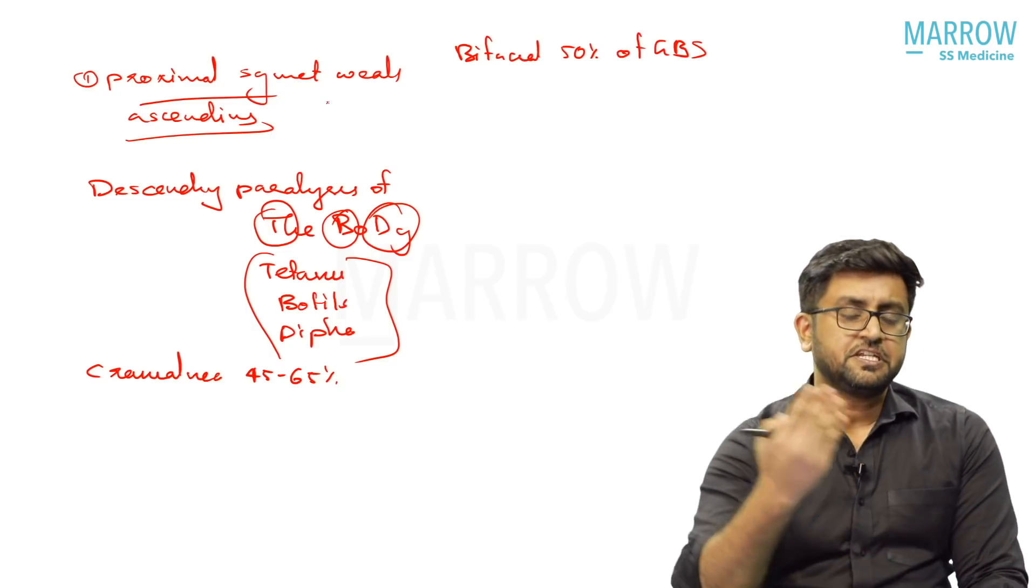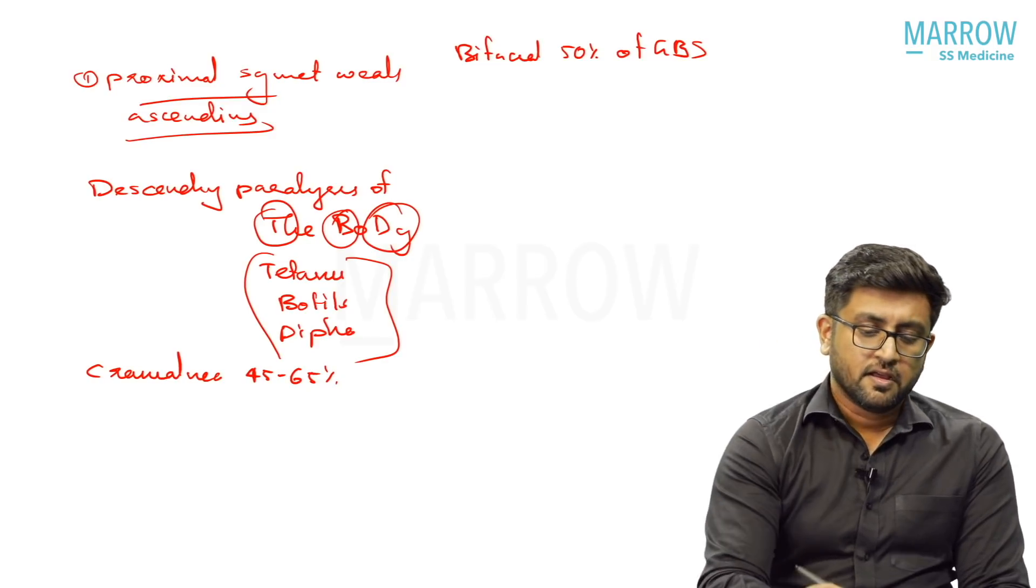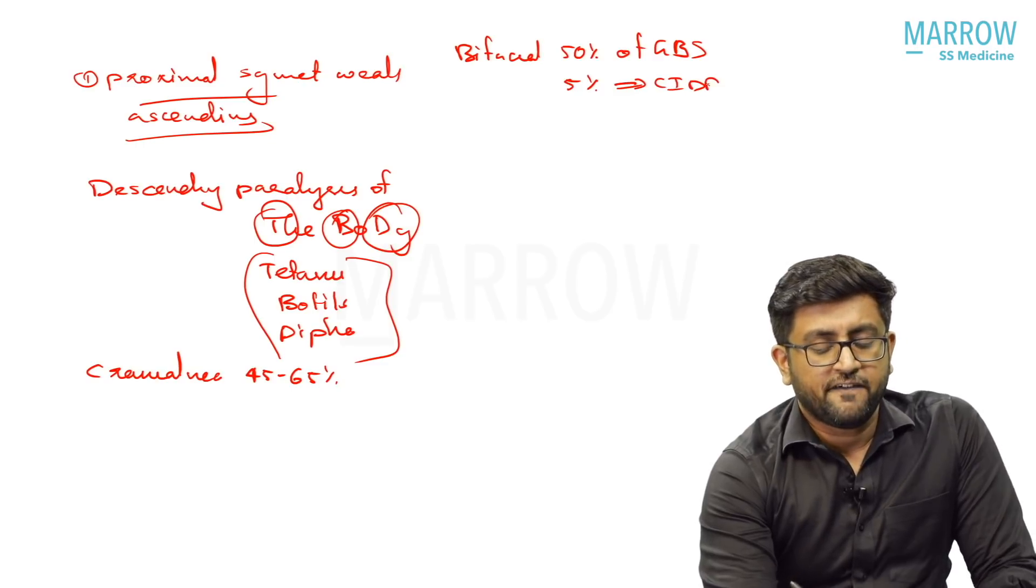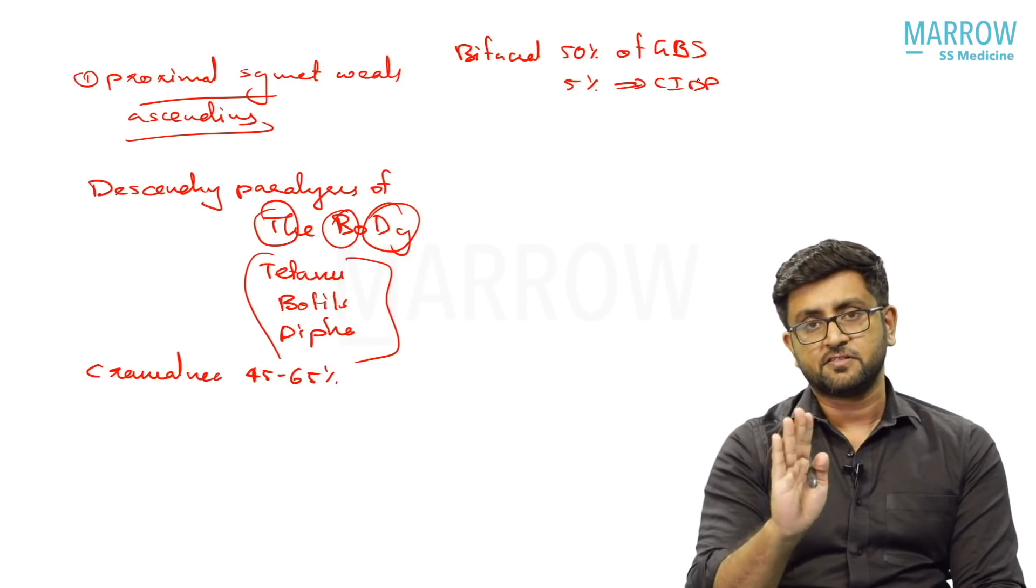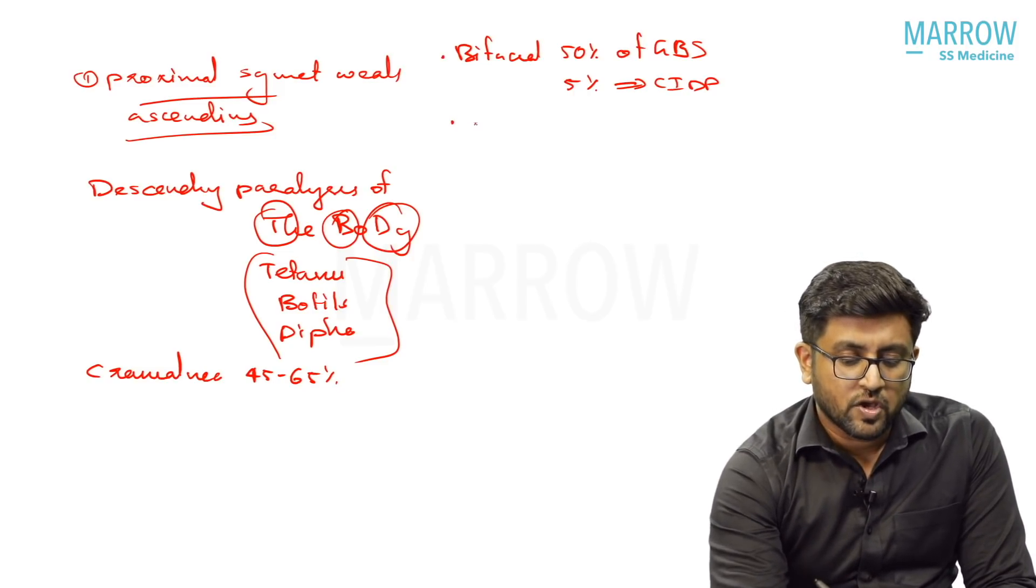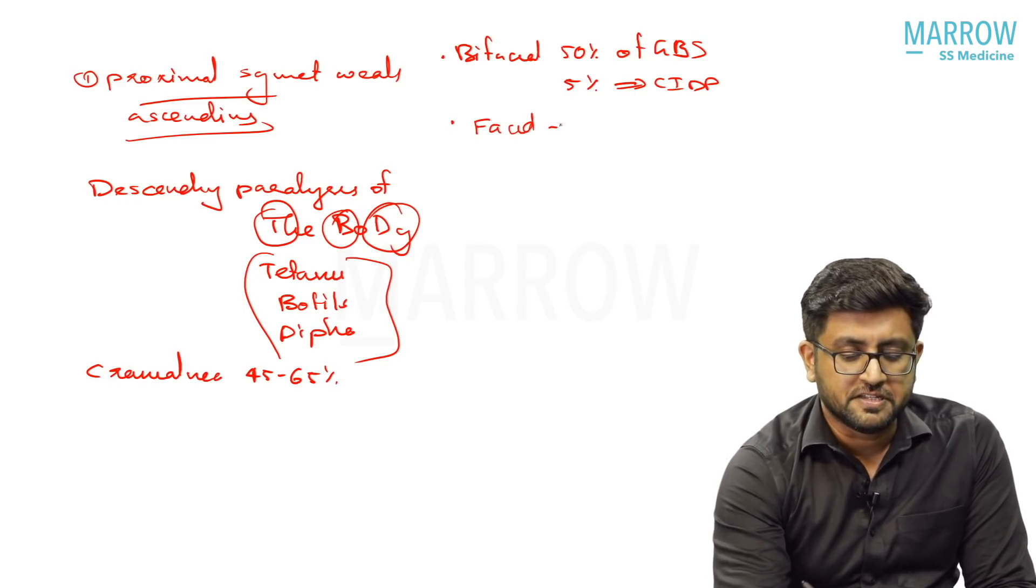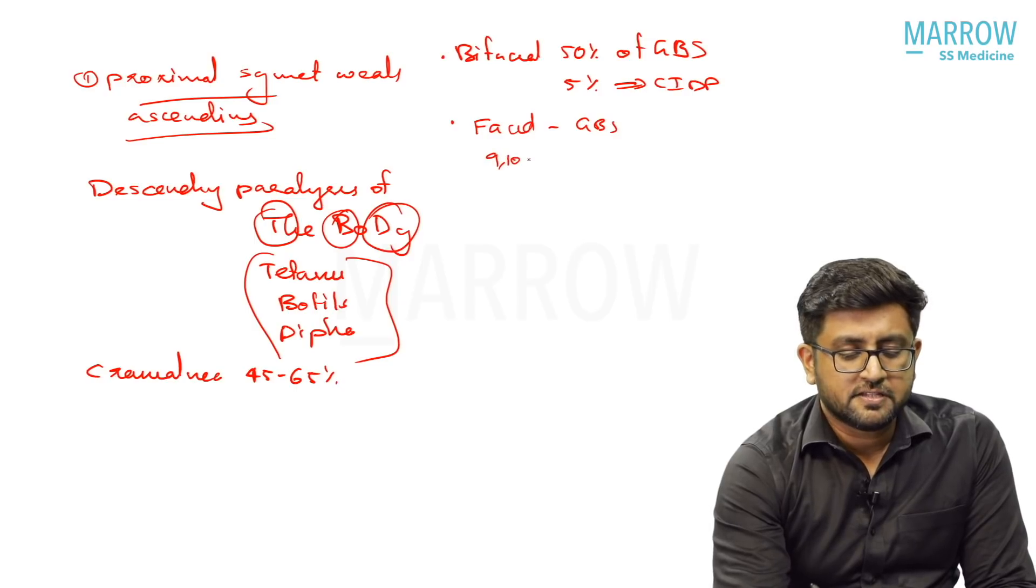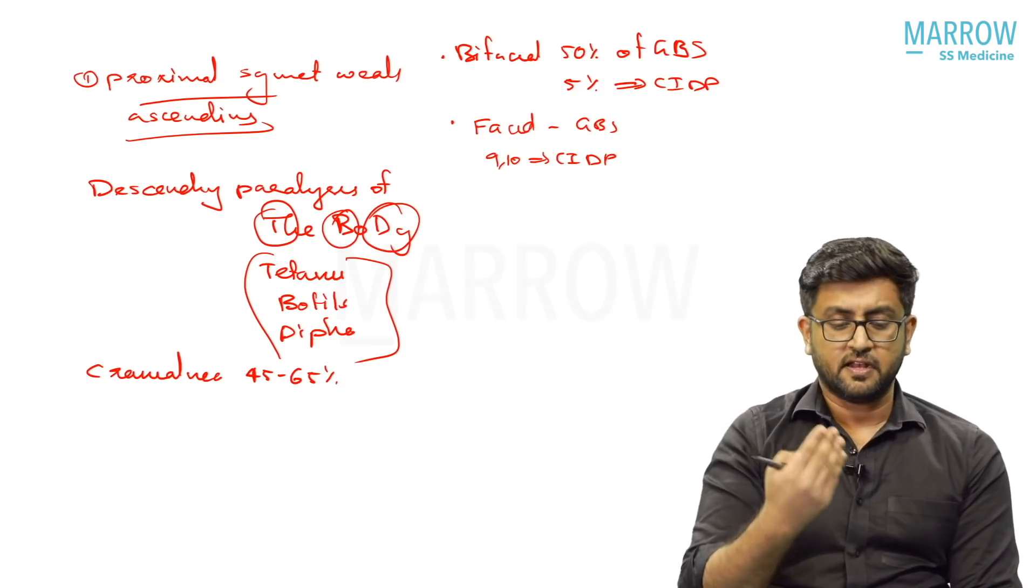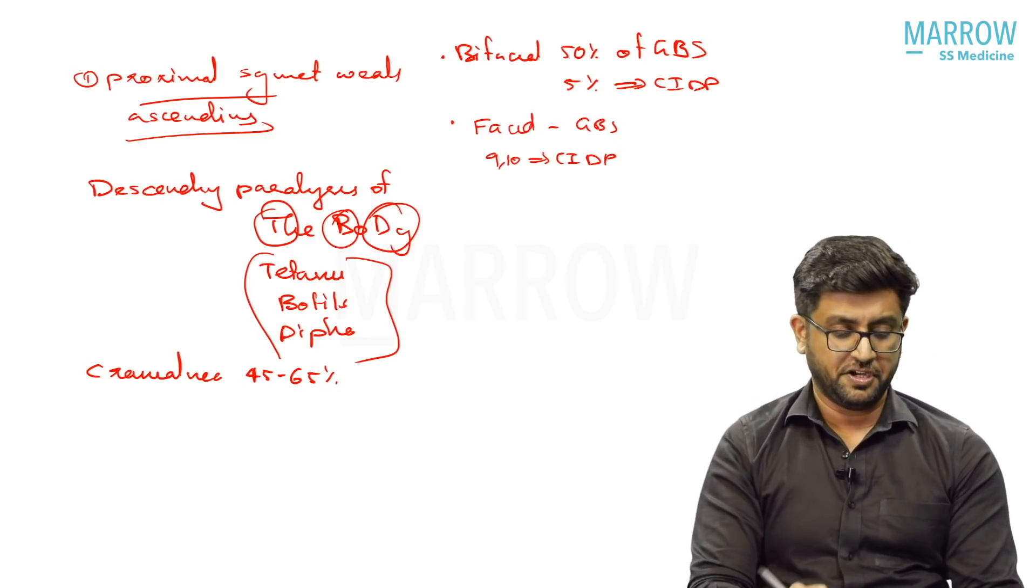The difference between GBS or AIDP and CIDP, where it is chronic inflammatory demyelinating polyneuropathy, is that bifacial palsy is 50 percent for GBS, it is 5 percent for CIDP. CIDP only 5 percent will have bifacial involvement, but GBS has 50 percent. The second thing is the nerve involvement will be more upper nerves. Facial nerve, seventh nerve, is more common in GBS, while bulbar or 9 and 10 is more common for CIDPs. It is not a hard and fast rule, but among the nerve involvement, this is like that.